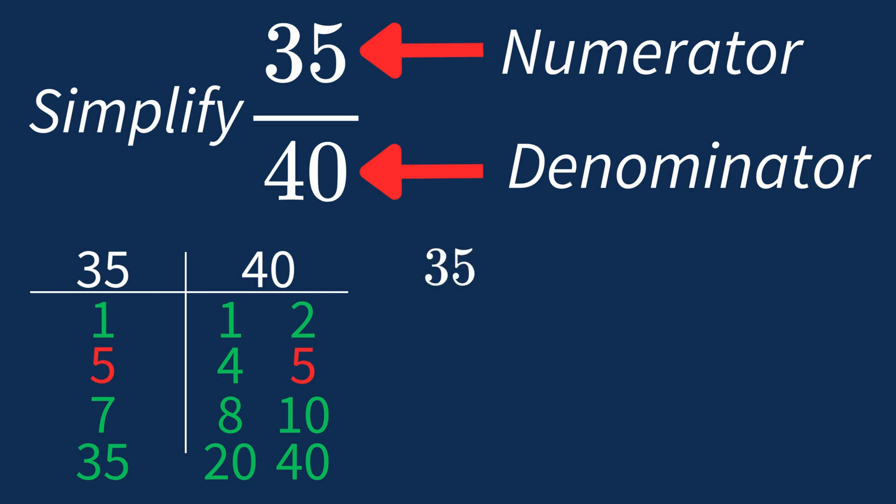Dividing the numerator, 35 by 5, gives us 7. Dividing the denominator, 40 by 5, gives us 8. So after dividing, the simplified fraction is 7 over 8.